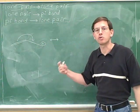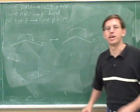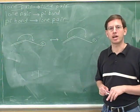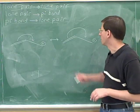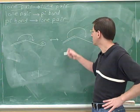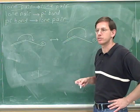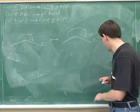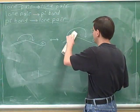We always start by redrawing the original picture. Then we ask, where are the electrons coming from? The tail of this arrow is on the pi bond, so we know the electrons are coming from the pi bond. So we should erase the pi bond.